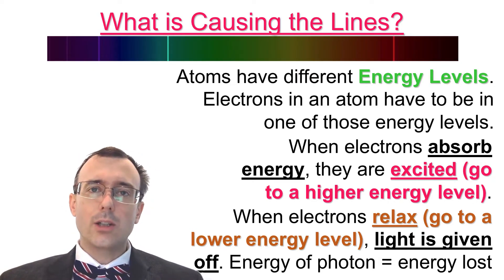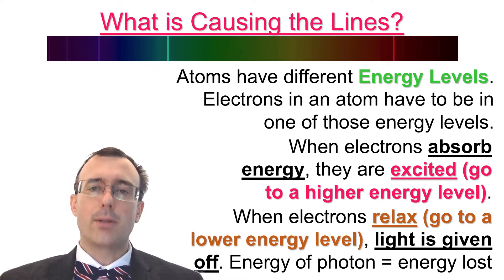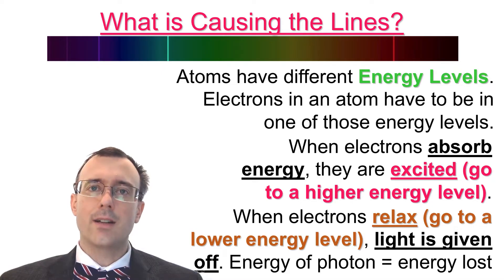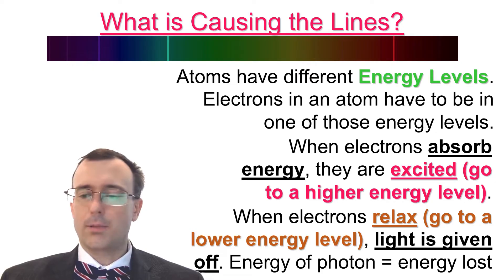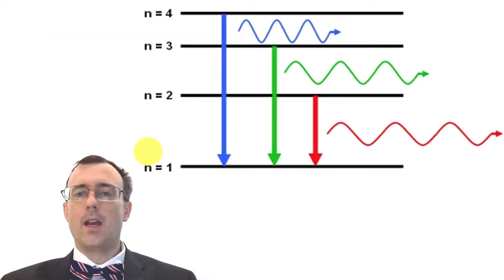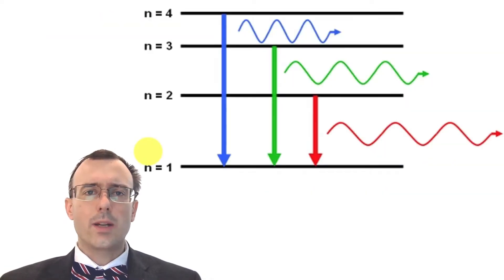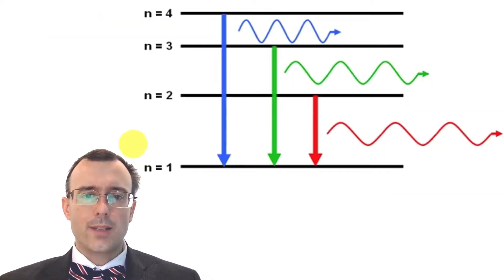When we look at these lines of light, what we're looking at is the difference in energy of the energy levels in the atom. We're literally looking at the electron going up and down these energy levels and producing very specific lines of light and specific energies being gained or lost in the process. A nice way to picture this is through this diagram.